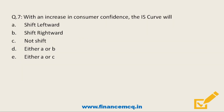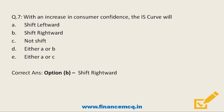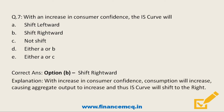Next question: When there is an increase in consumer confidence, the IS curve will — Option A: Shift leftward, Option B: Shift rightward, Option C: Not shift, Option D: Either A or B, Option E: Either A or C. The correct answer is Option B — shift rightward. This is because with an increase in consumer confidence, consumption will increase, causing aggregate output to increase, and thus the IS curve will shift to the right.